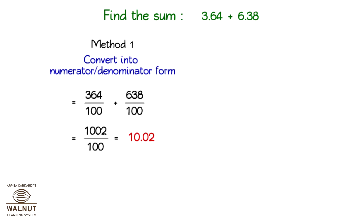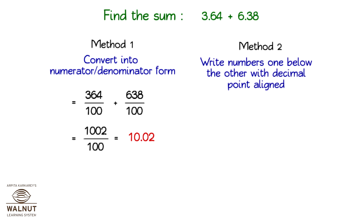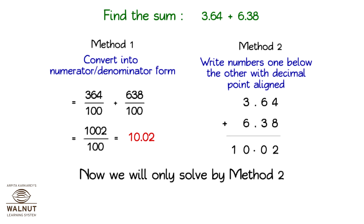Method 2: Write numbers one below the other with the decimal point aligned. 3.64 plus 6.38 is equal to 10.02. From now on we will only solve by Method 2.